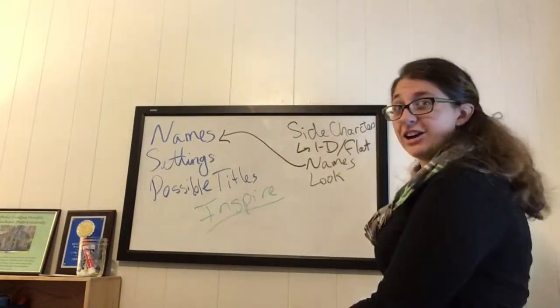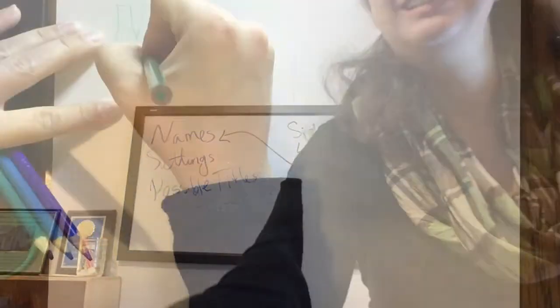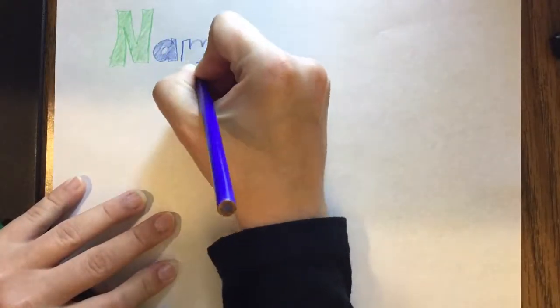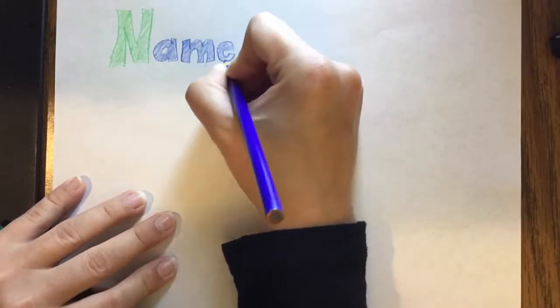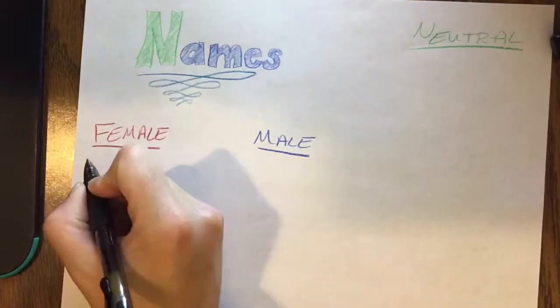So we've made our list of lists. Now it's time to actually start making them. So I started off with my list of names, and I broke it down into three categories. I broke it down into female, male, and neutral. And part of the reason I did this was to keep myself more organized. And I just started dumping names down.